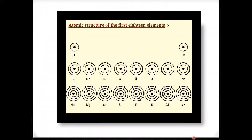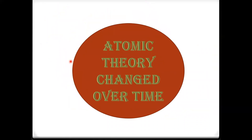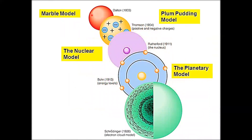This is how atomic structures are drawn: the nucleus is in the center, and electrons are shown revolving around it in particular orbits. We have listed the atomic structures for the first 18 elements. When drawing electrons, you can use a small 'e' with a negative charge symbol, or a dot. The atomic theory has changed over time — beginning with John Dalton, then J.J. Thomson, then Rutherford — each model building on the previous.